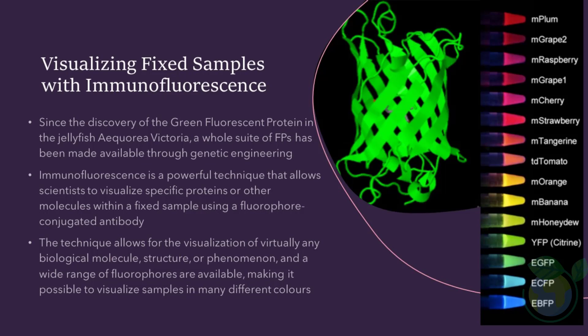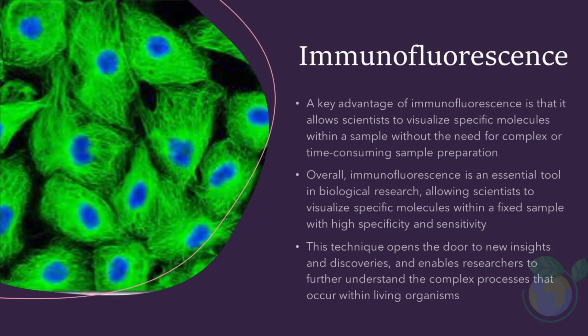In live cell fluorescent staining, scientists use similar methods to visualize molecules within living cells. This two-step process results in the targeted visualization of the specific molecule of interest. Immunofluorescence can be applied to a wide range of samples, including cells and tissue samples, and offers a high degree of specificity and sensitivity. The technique allows for the visualization of virtually any biological molecule, structure, or phenomenon, and a wide range of fluorophores are available, making it possible to visualize samples in many different colors.